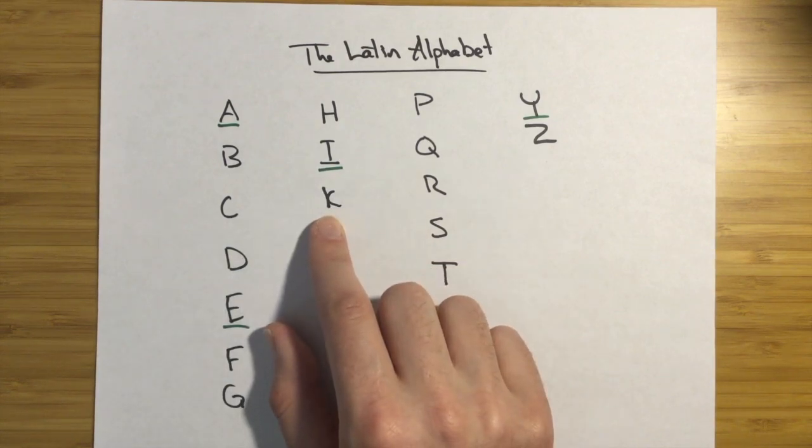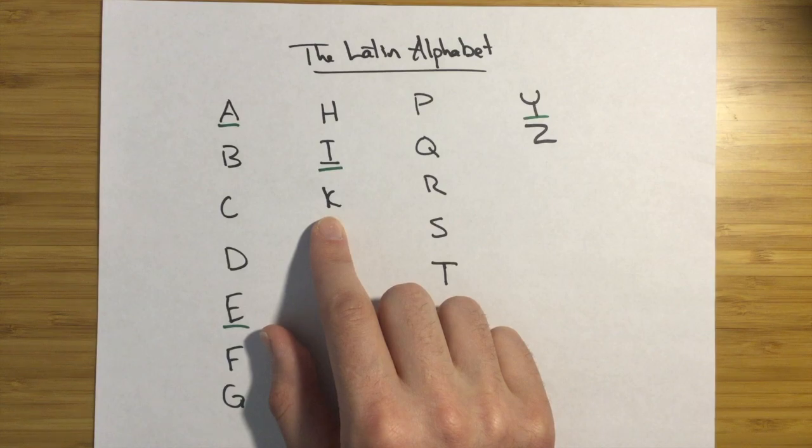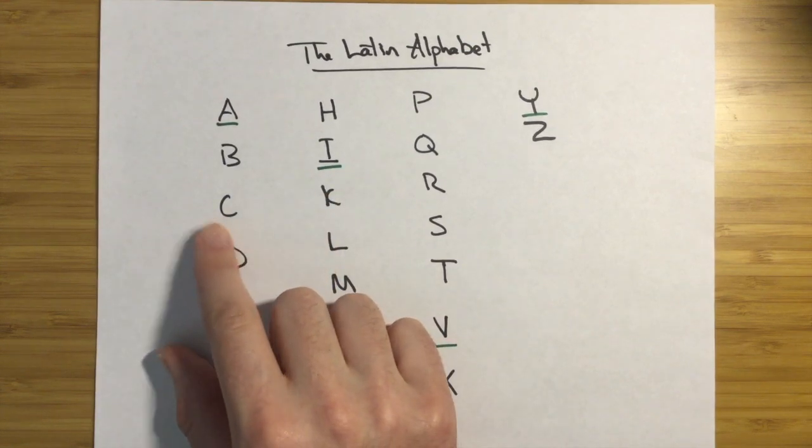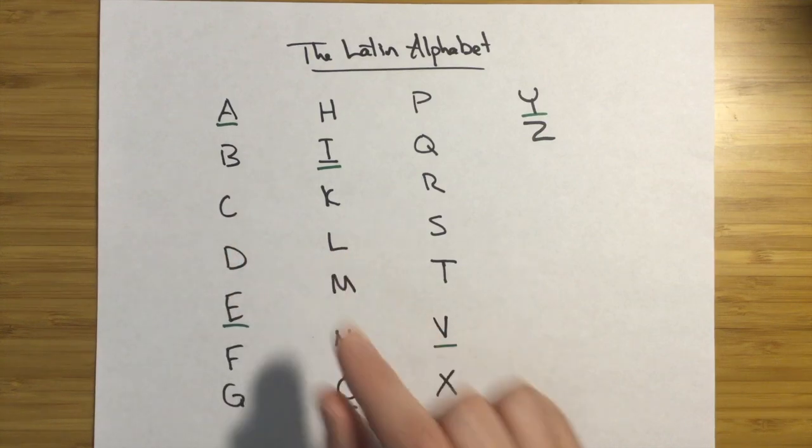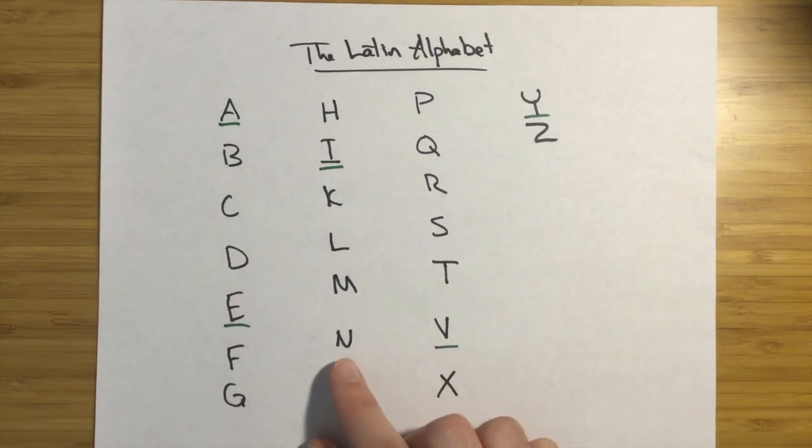K makes a K sound. It's mostly used for loan words from Greek because Latin had its own letter for this. L makes a L sound. M makes a M sound. N makes a N sound.